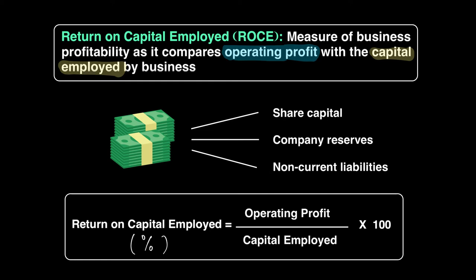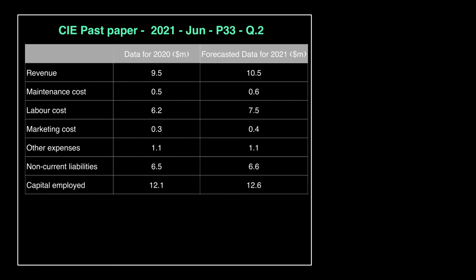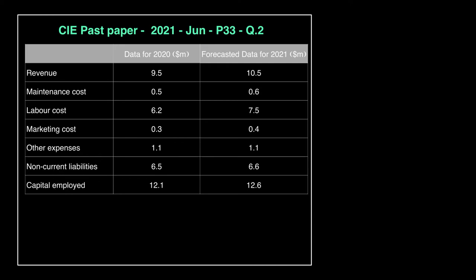Now let's look at a question where you are asked to calculate the ROCE of a company. This question appeared in a past paper — 2021 June, paper 33, question number two. We are given a table with data for two years: 2020 and 2021 (which is forecasted). The table provides revenue, maintenance cost, labor cost, marketing cost, other expenses, non-current liabilities, and capital employed. You are asked to calculate the ROCE for 2020 and 2021.